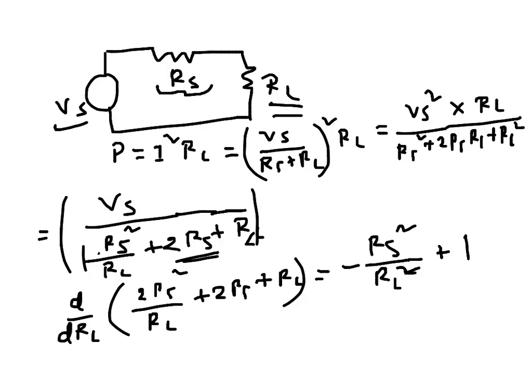So if I equate it to zero since I am trying to find out the value of RL, RL squared is equal to RS so RL is equal to plus minus RS.